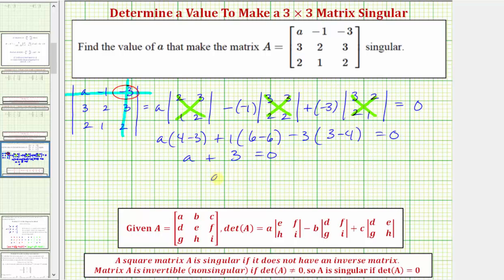Subtracting three on both sides, A equals negative three if matrix A is singular. I hope you found this helpful.